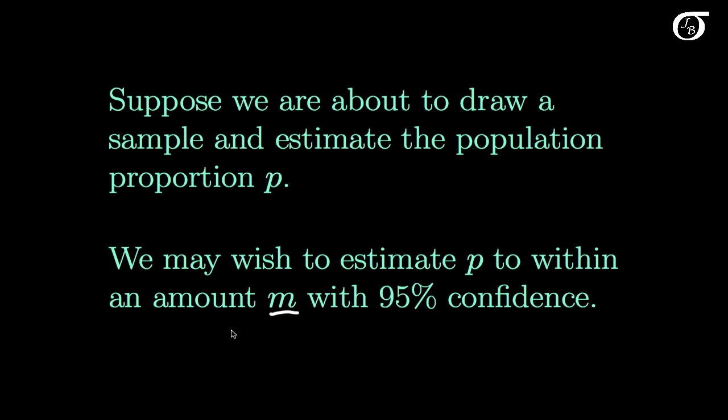So we might want to estimate P to within 0.01 or 0.03 or some other value depending on the setting with 95% confidence. We can also change that confidence level as well. And the question we're asking here is how large a sample size is required to achieve that goal?